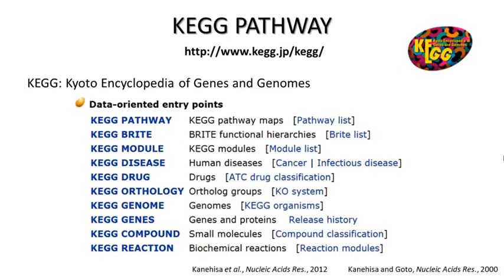KEGG stands for Kyoto Encyclopedia of Genes and Genomes. It organizes data in several overlapping ways, including pathway, diseases, drugs, compounds, and so on. We will focus on KEGG pathways here. As of 2013, there are 450 reference pathways in KEGG.